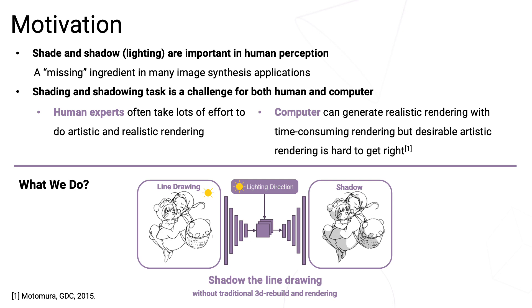In computer graphics, cell shading is hard to get right because the shadows must preserve a binary appearance. It is either lit or not — nothing in between. It would be easily ruined by the smallest inconsistency.